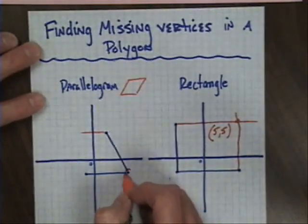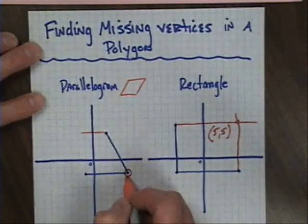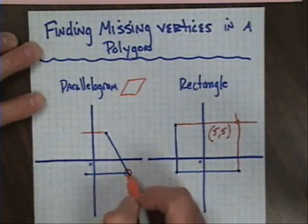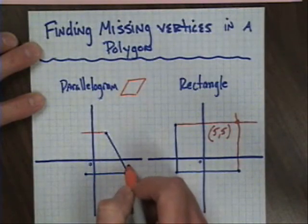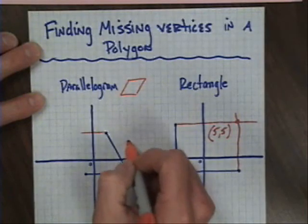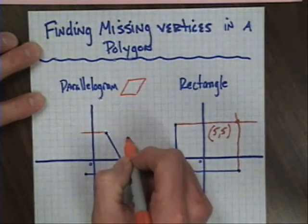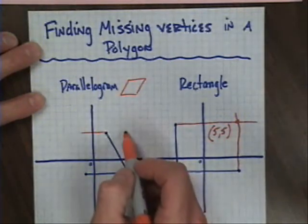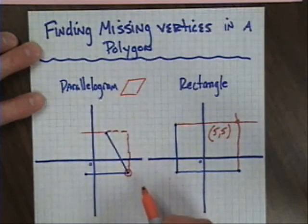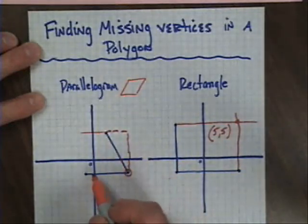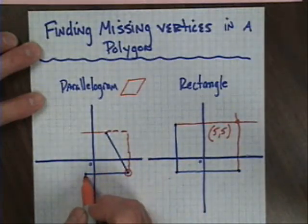I'm going to start at this lower point because this point and that point have similarity. I'm going to count up six spaces, and then count to my left three, to get to the upper point.